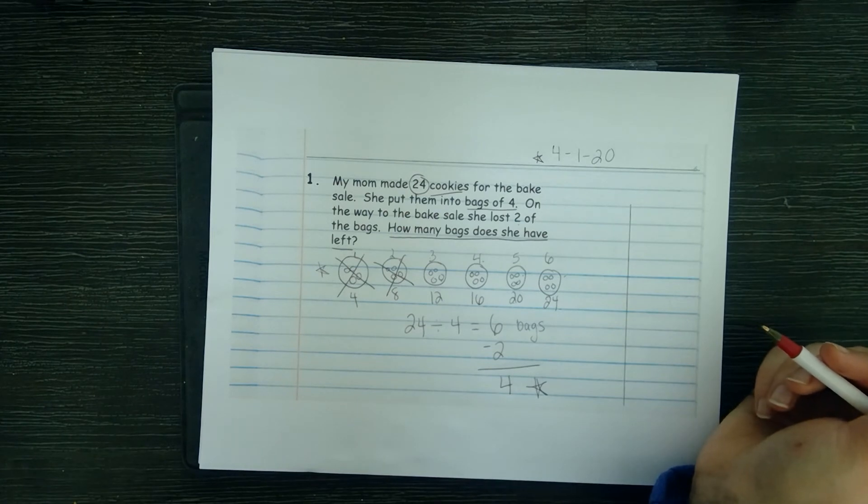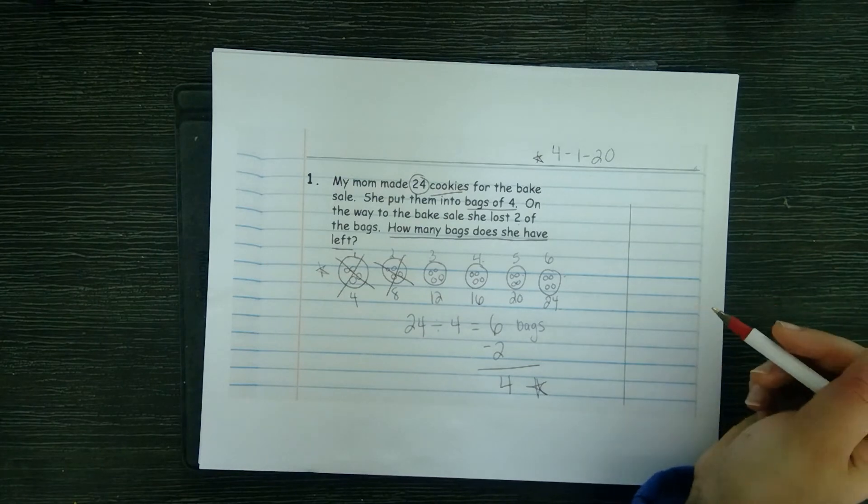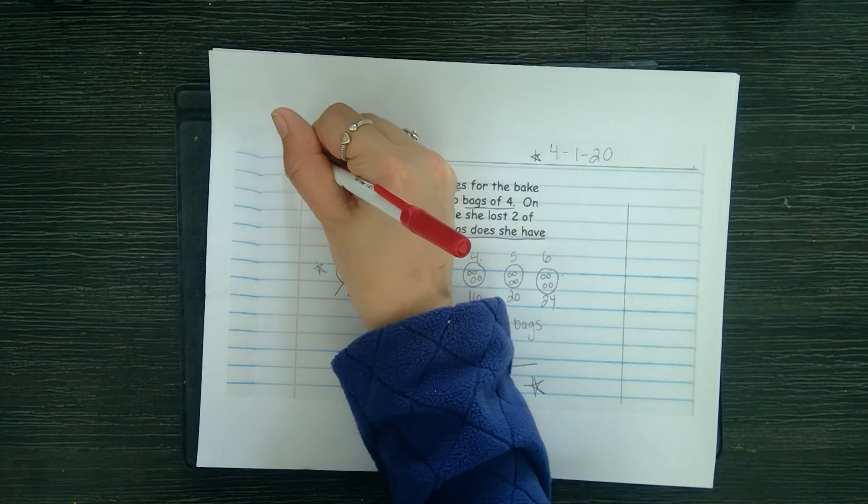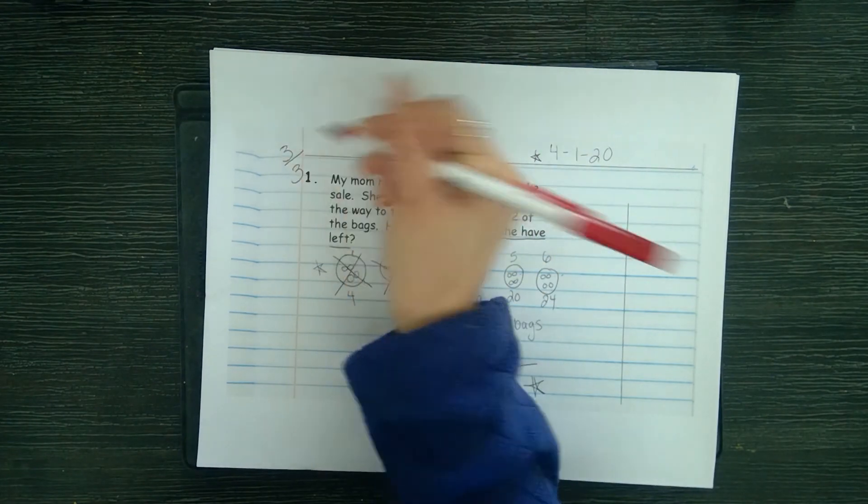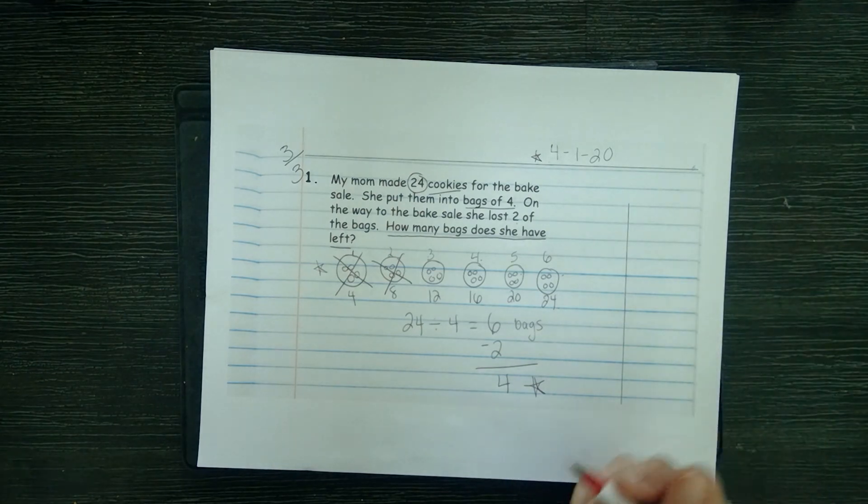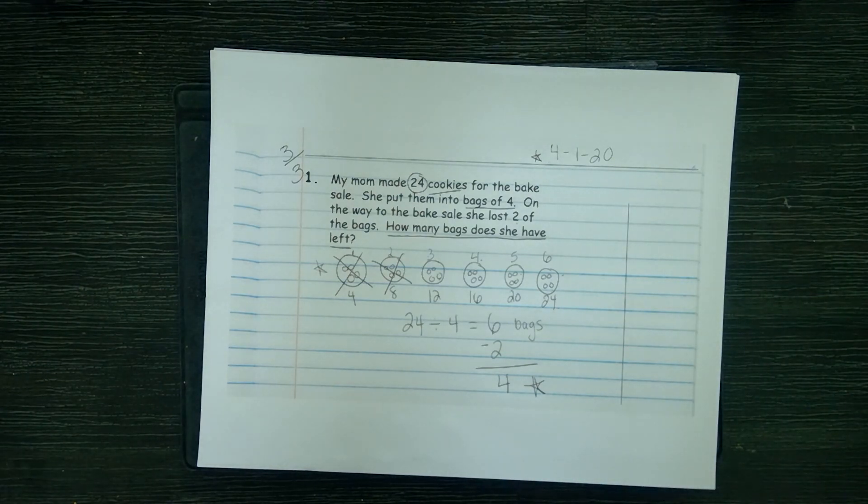That was today's math review, so go ahead and correct your work. Your star power for today was out of three. I got three out of three, so write your star power at the top. I cannot wait to do another math review later. Thank you so much, you guys, goodbye!